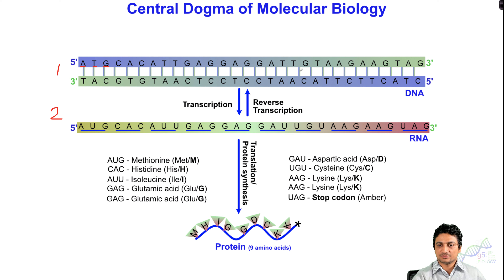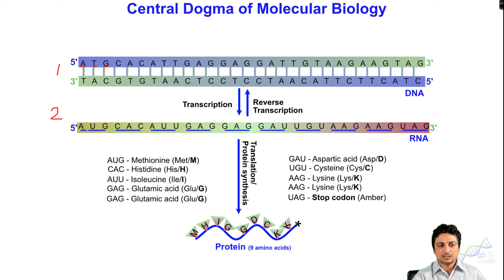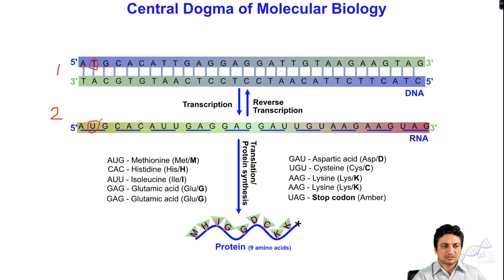When DNA is converted into RNA, there is only one strand. The top 5 prime to 3 prime strand is converted into RNA and all the sequence will be the same. However, the T nucleotide is converted into U — that means thymine is converted into uracil. All other nucleotides will be the same.